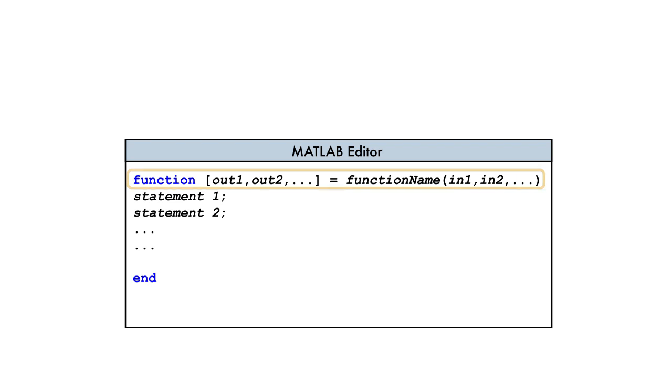A MATLAB function consists of two parts, the declaration and the body. The declaration begins with the keyword function, followed by how we will use or call the function. This means we provide the output variables, the function name and the input variables.